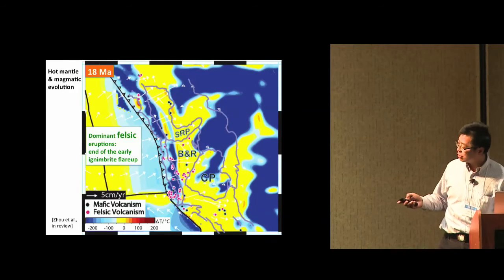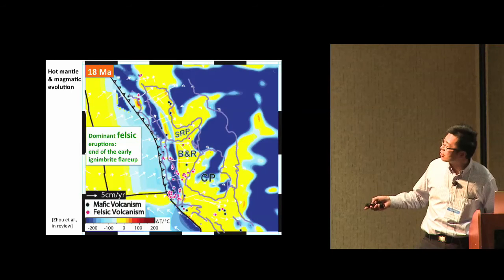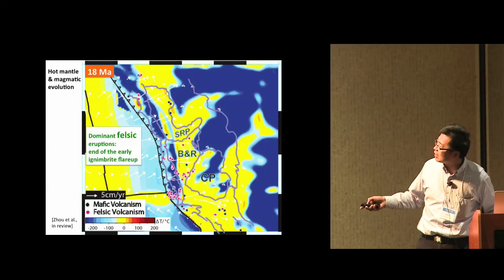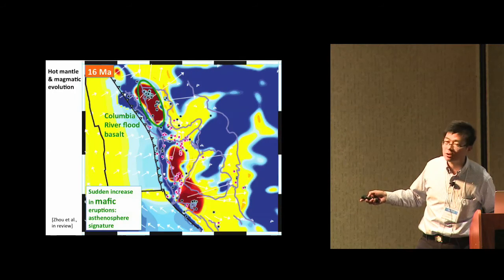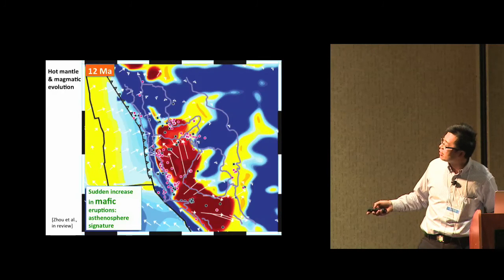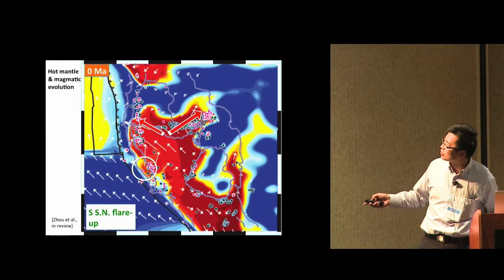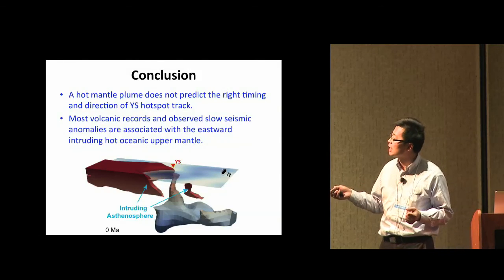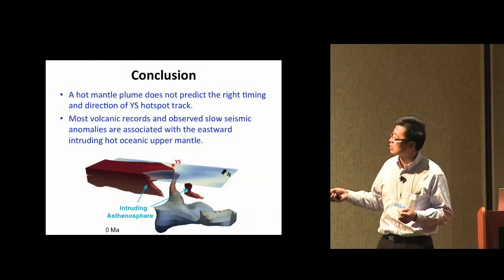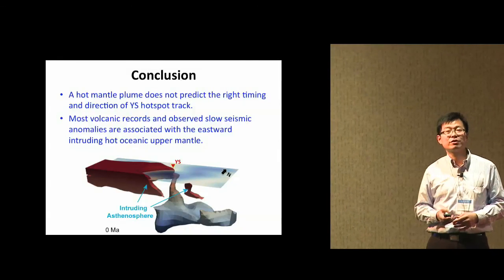Looking at the time evolution at 80-kilometer depth in map view: at 18 million years there is little hot anomaly, at 16 million years the Columbia River flood basalt pulse appears, and then at 12 million years we see the bifurcating movement of the hot mantle all the way to today. The overall conclusion is that the mantle plume is actually not doing much — instead it is intruding hot oceanic upper mantle that causes the observed Yellowstone volcanic province, a conclusion very different from the traditional view.